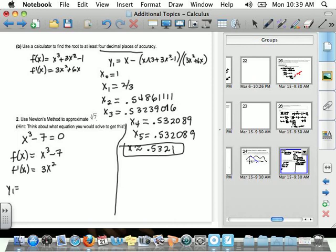So on my y1, I'm going to do x minus f of x divided by f prime of x. Okay, and then I'm going to get my approximations.